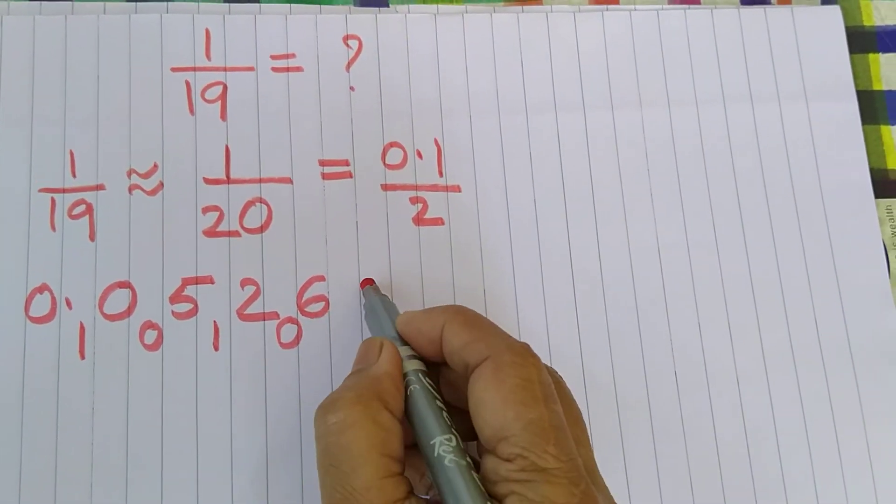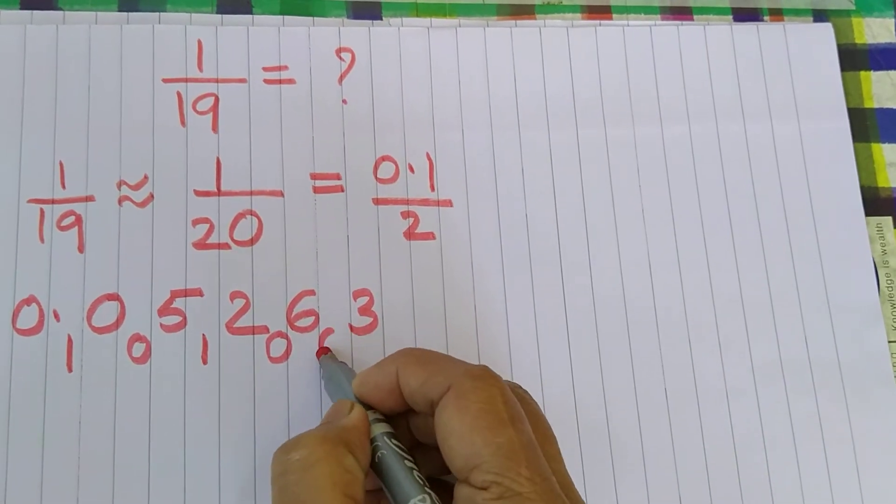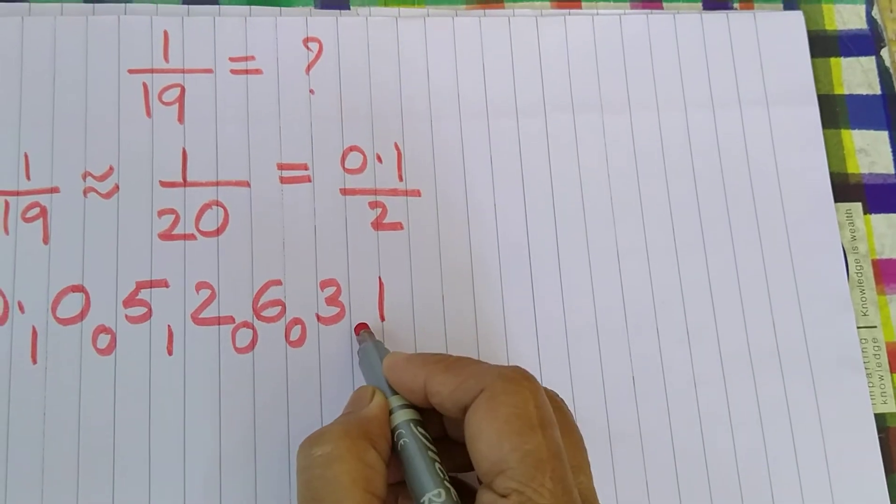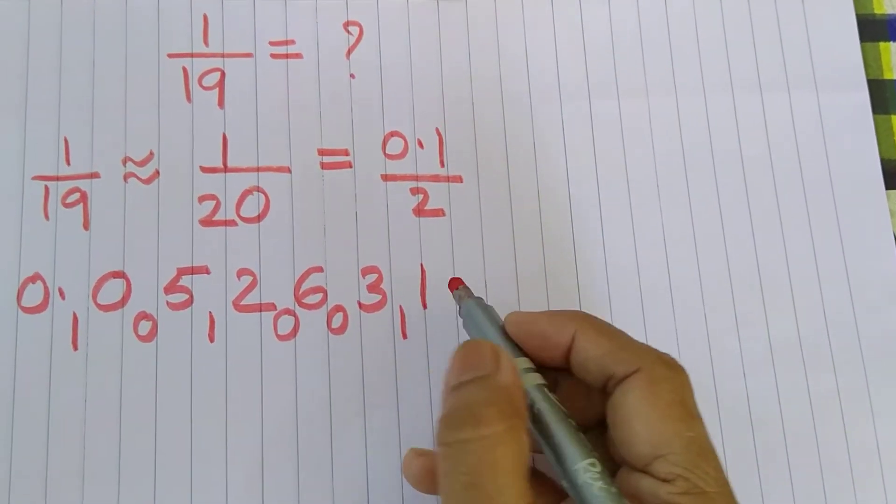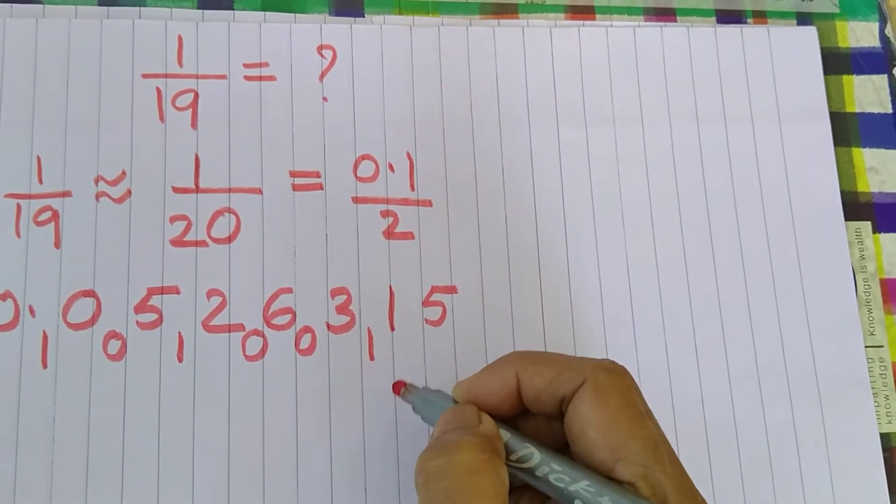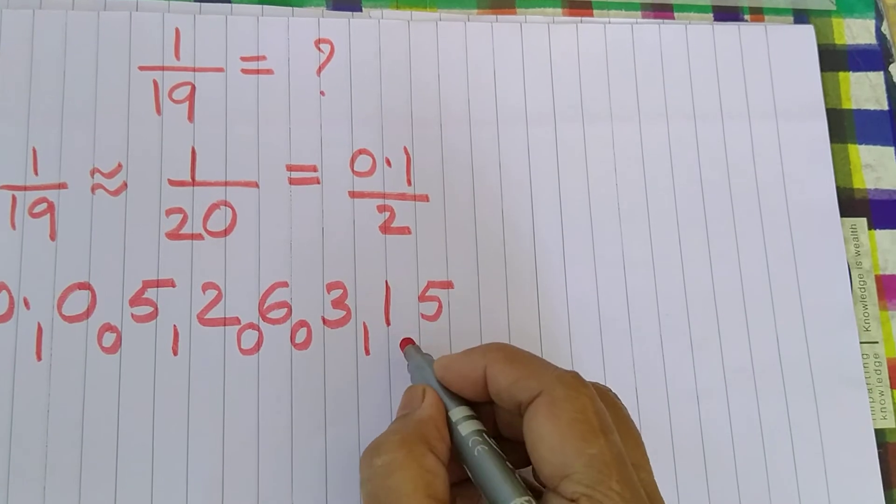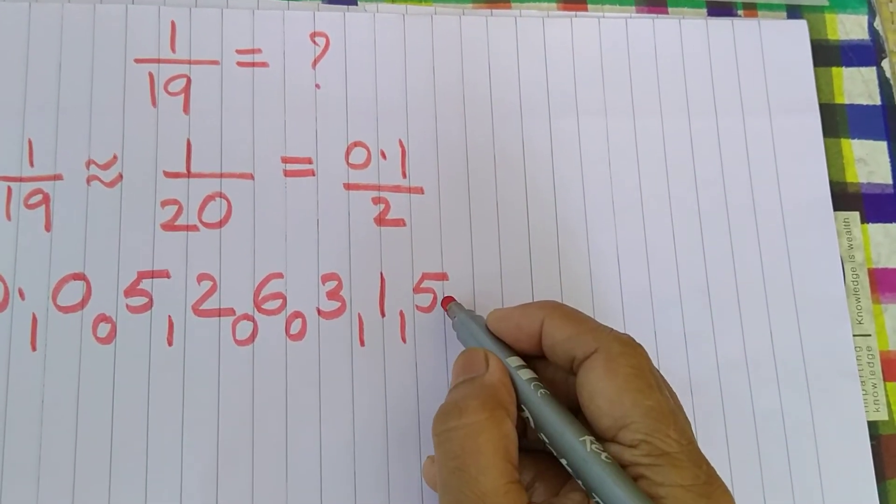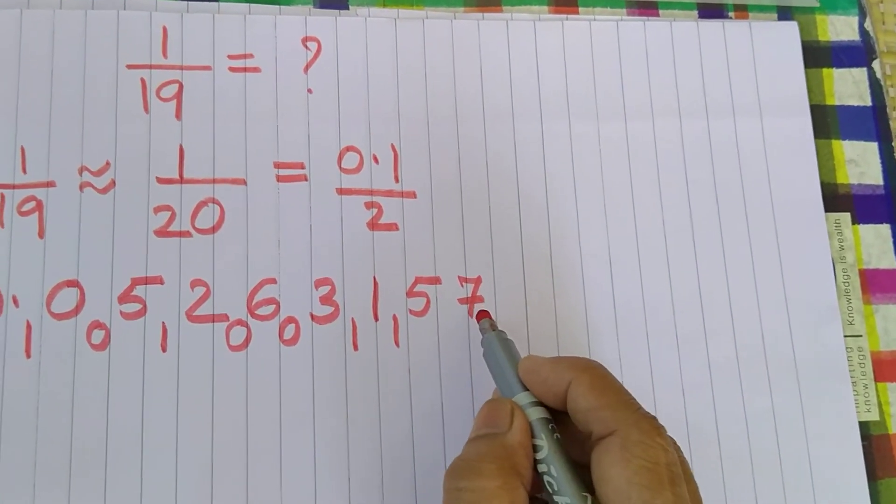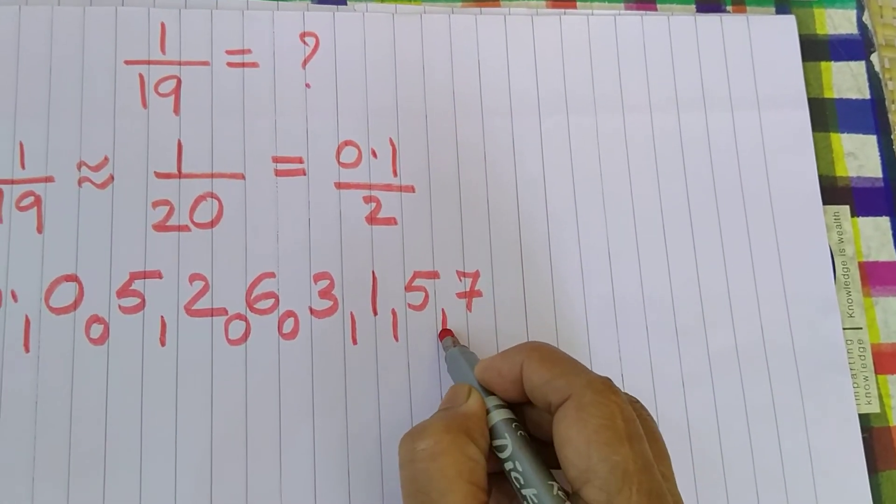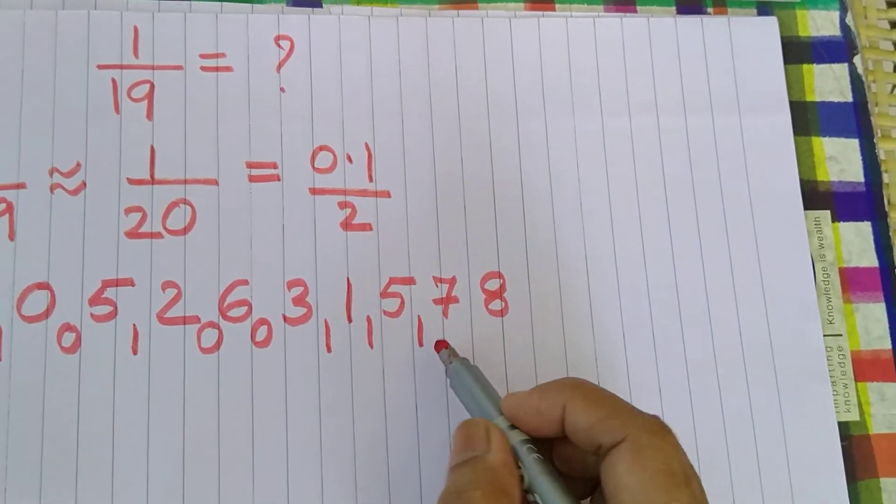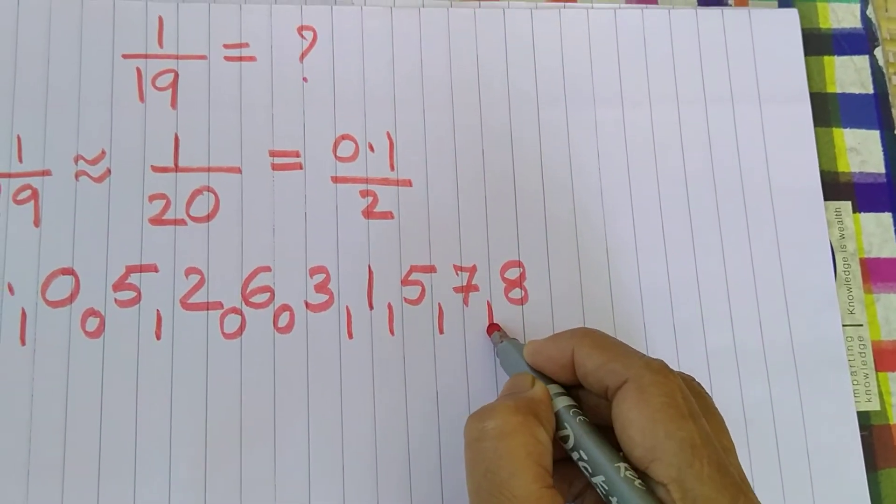6 divided by 2. 3 remainder 0. 3 divided by 2. 1 remainder 1. This becomes 11. So 11 divided by 2. So 5 times. 2 times 5 is 10 remainder 1. 15. So 7 times. 14. So remainder 1. Again 17. So 8 times. 16 remainder 1.